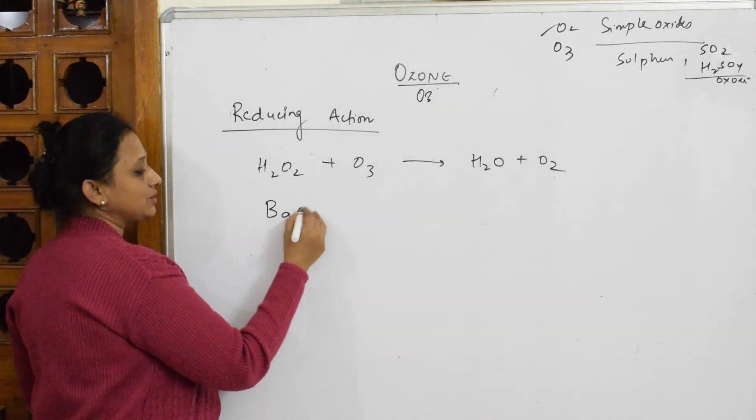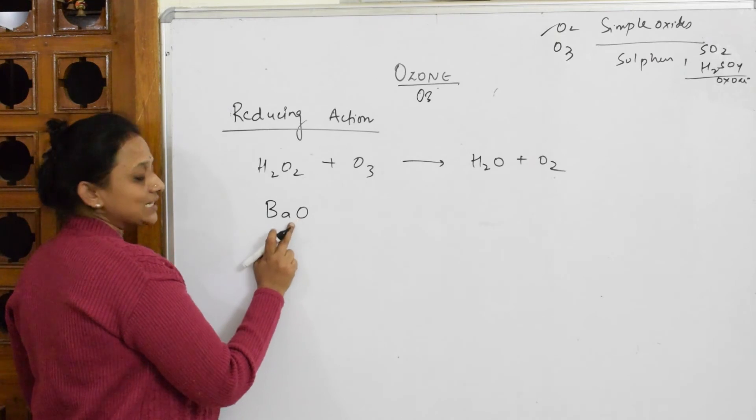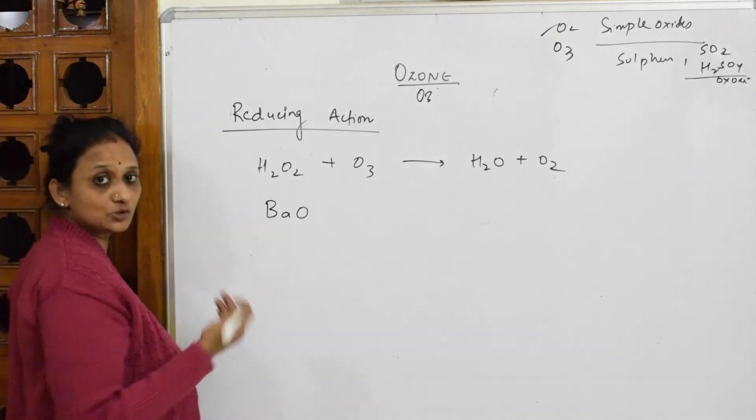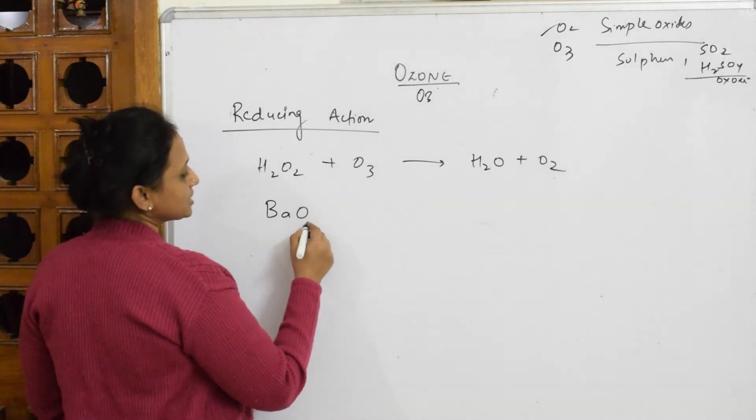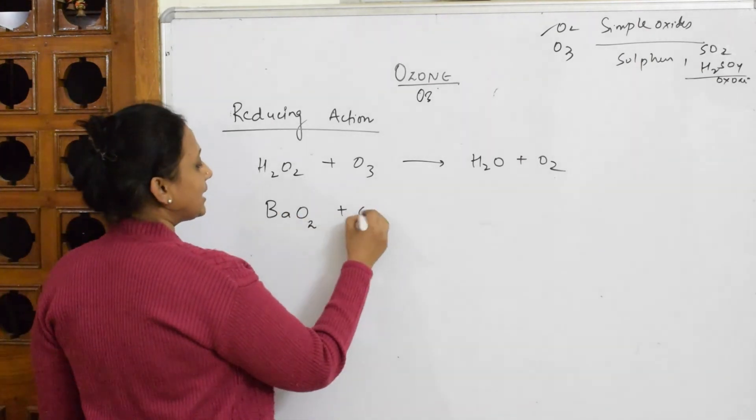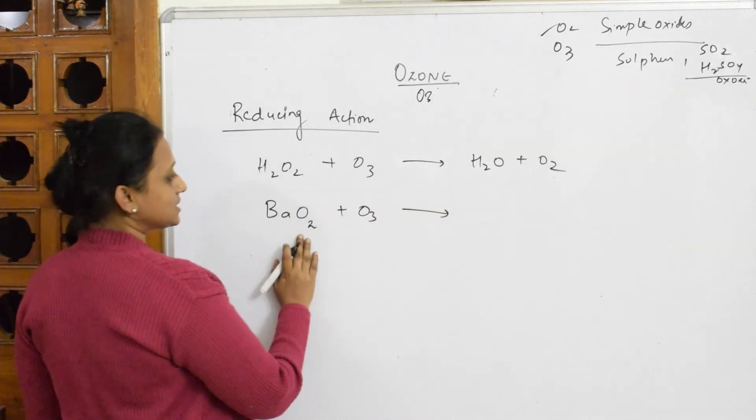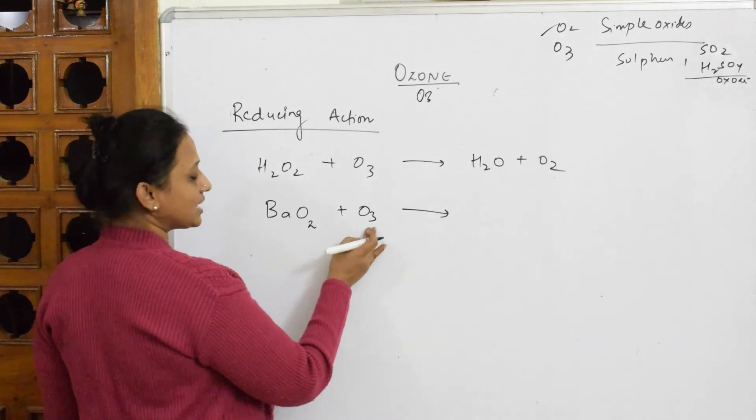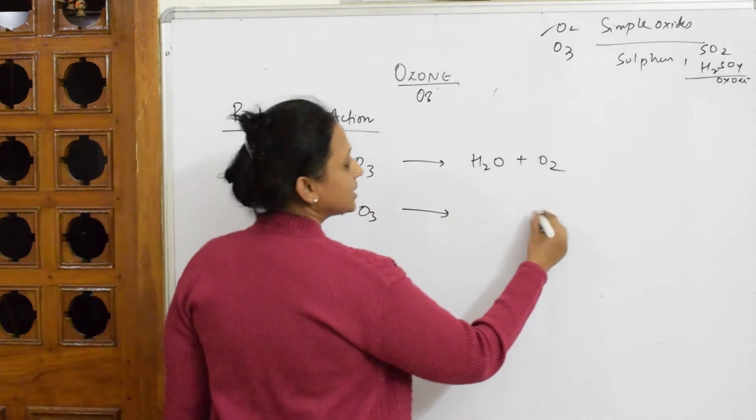Now let's take one more medium. Oxygen valency is two. Here I'm adding ozone, which is showing its oxidizing property, and it gets converted to O2.